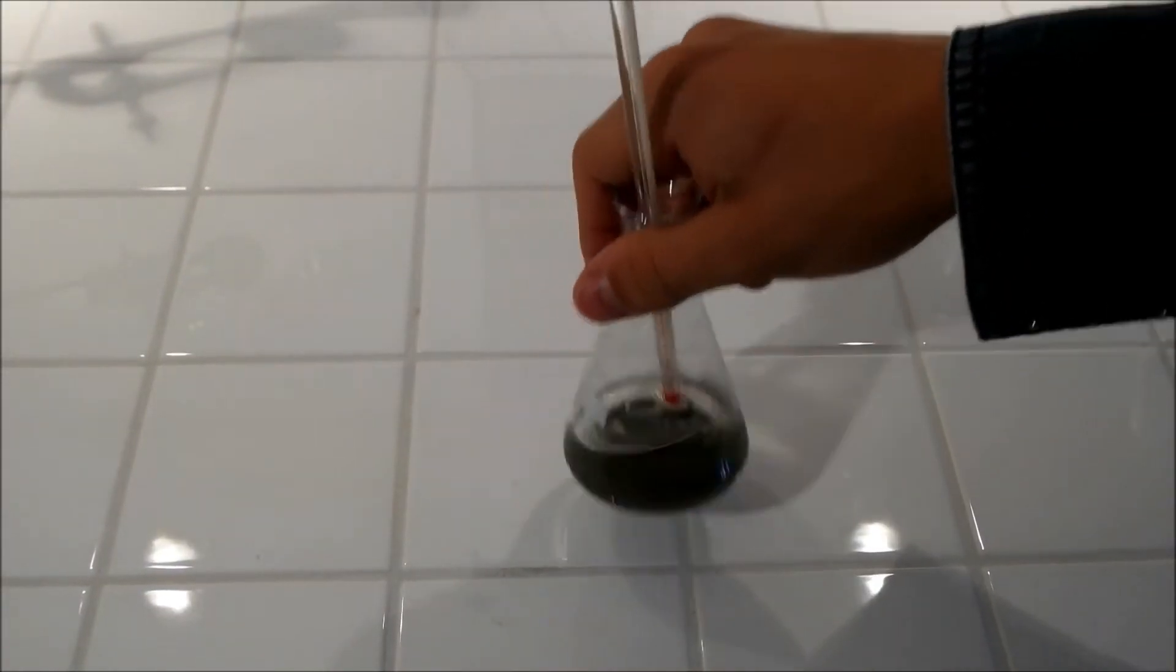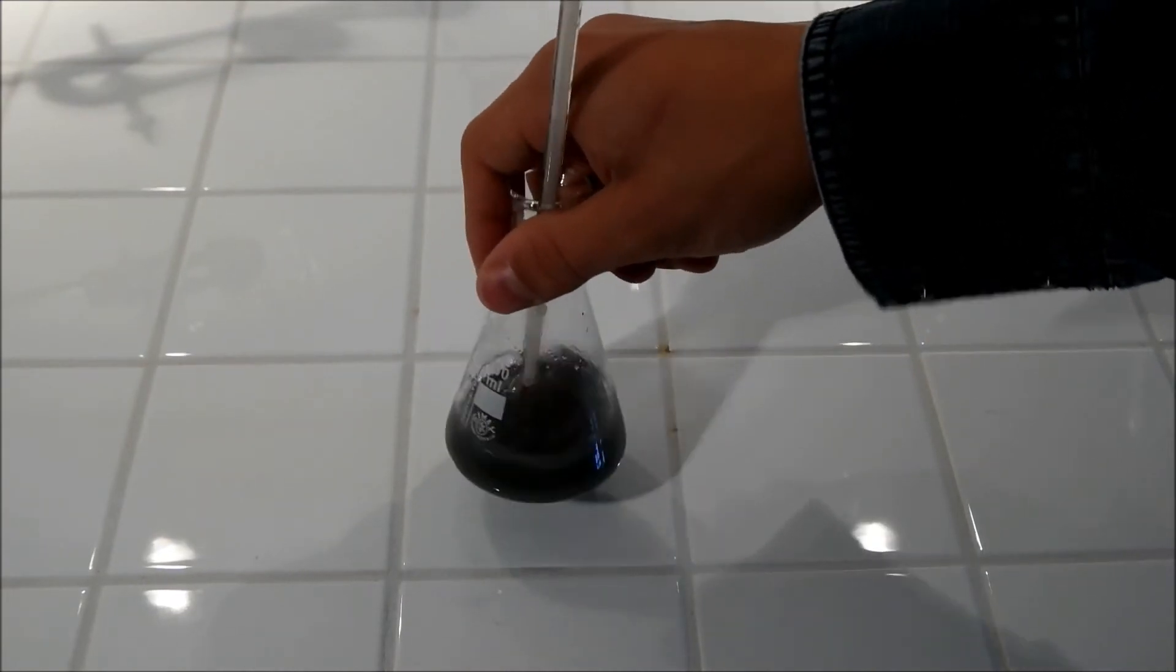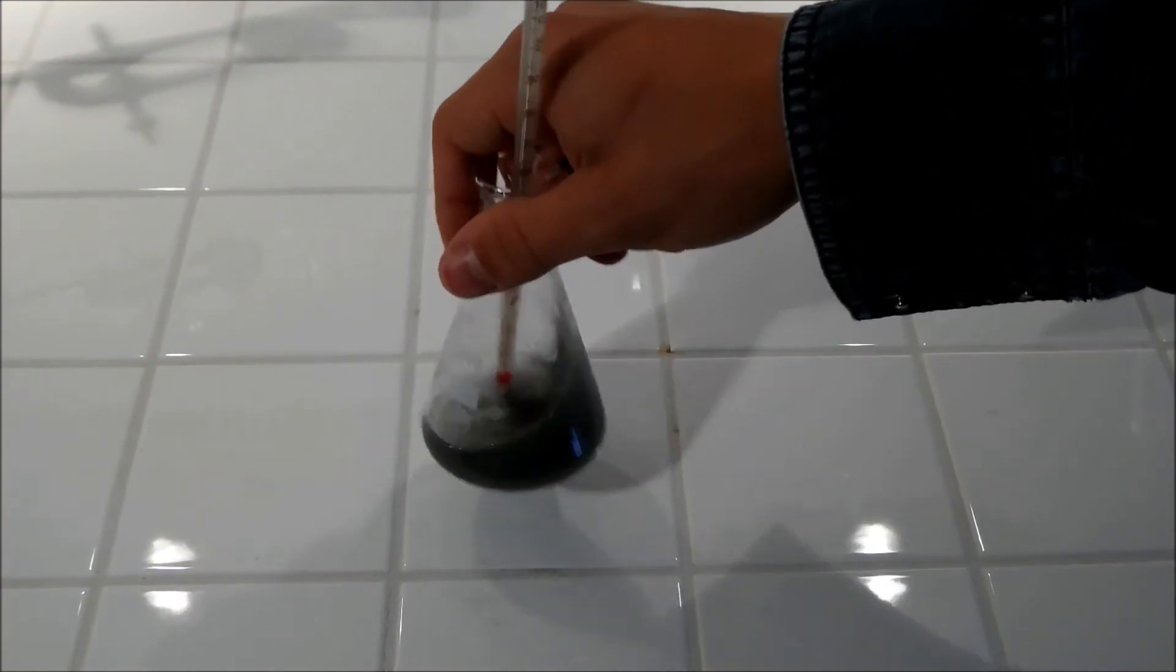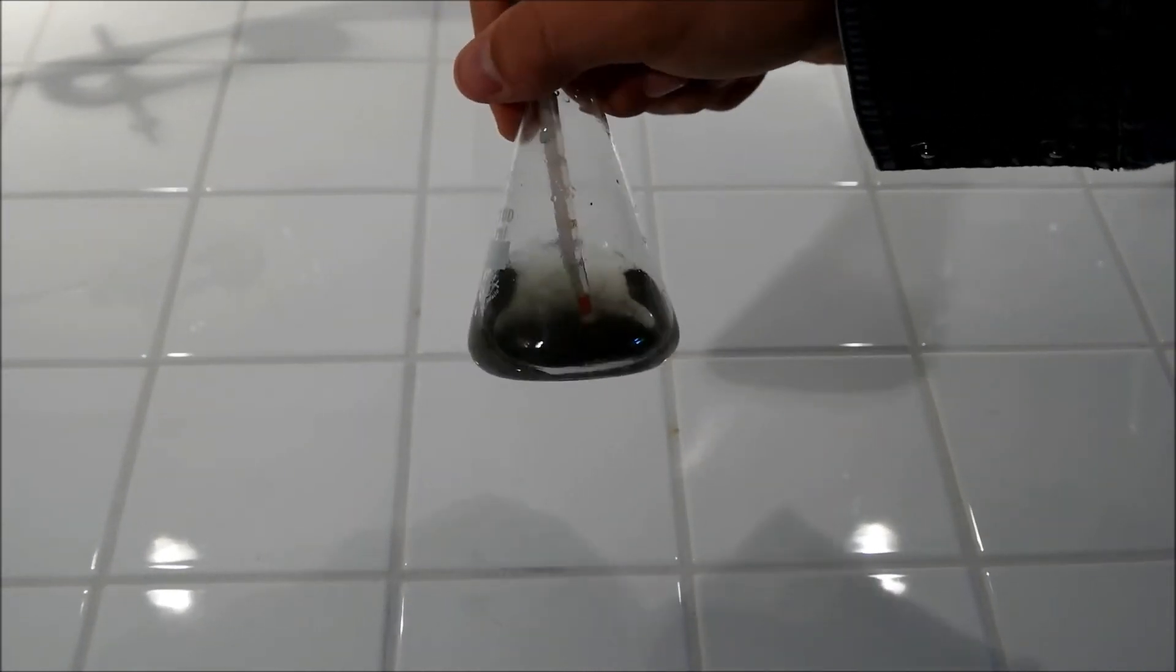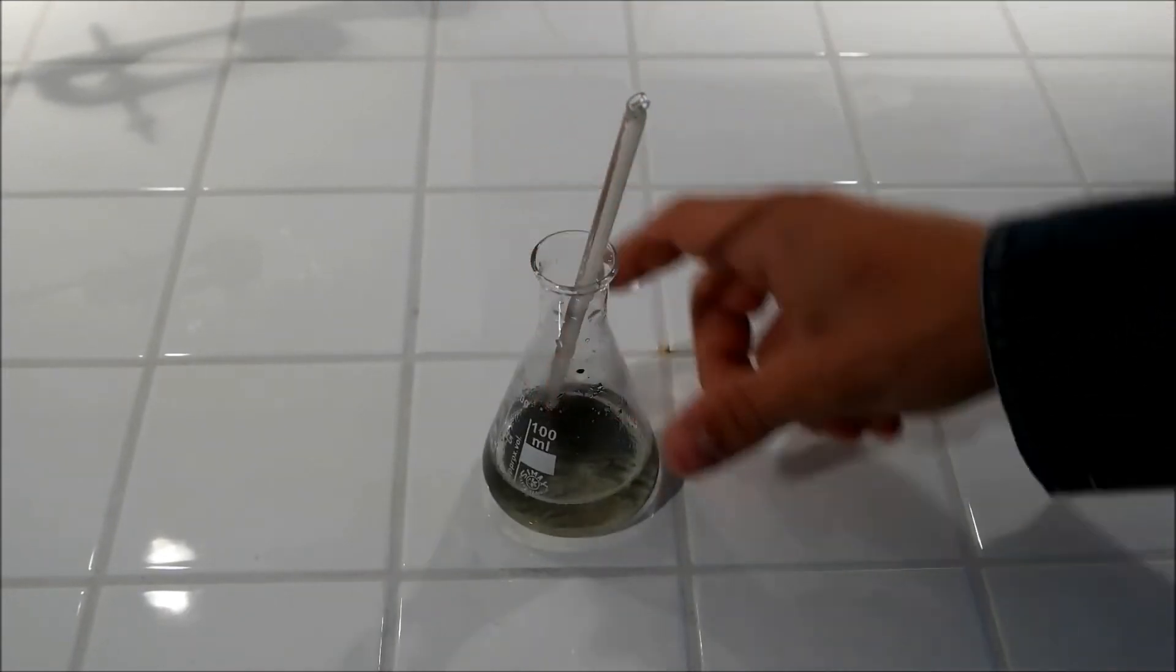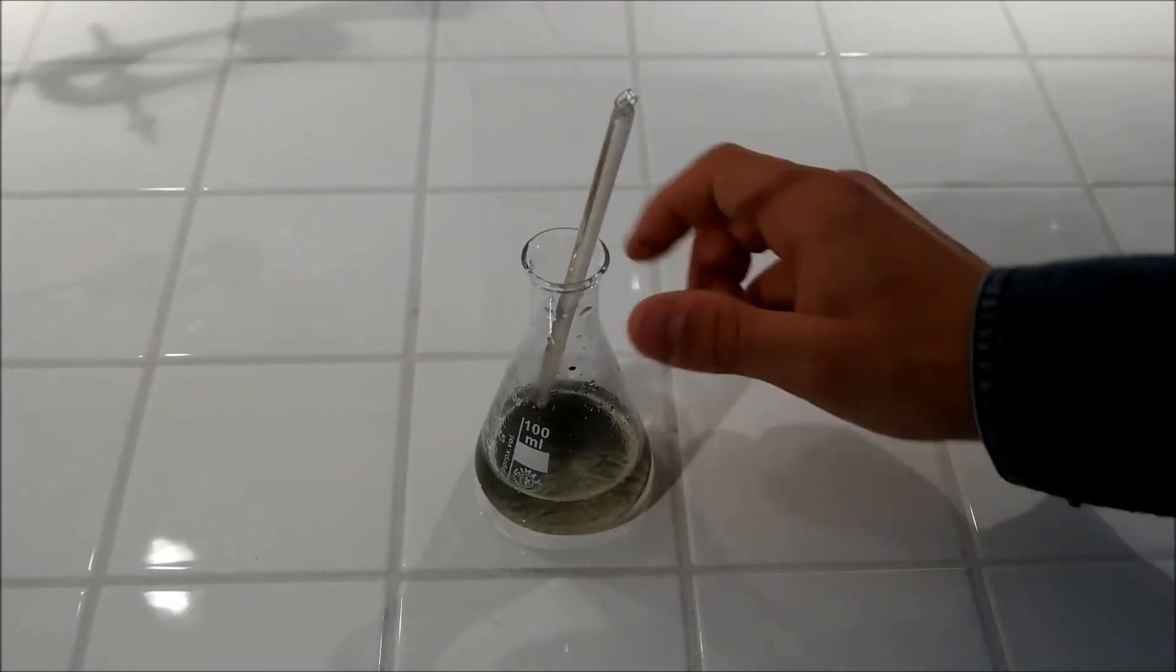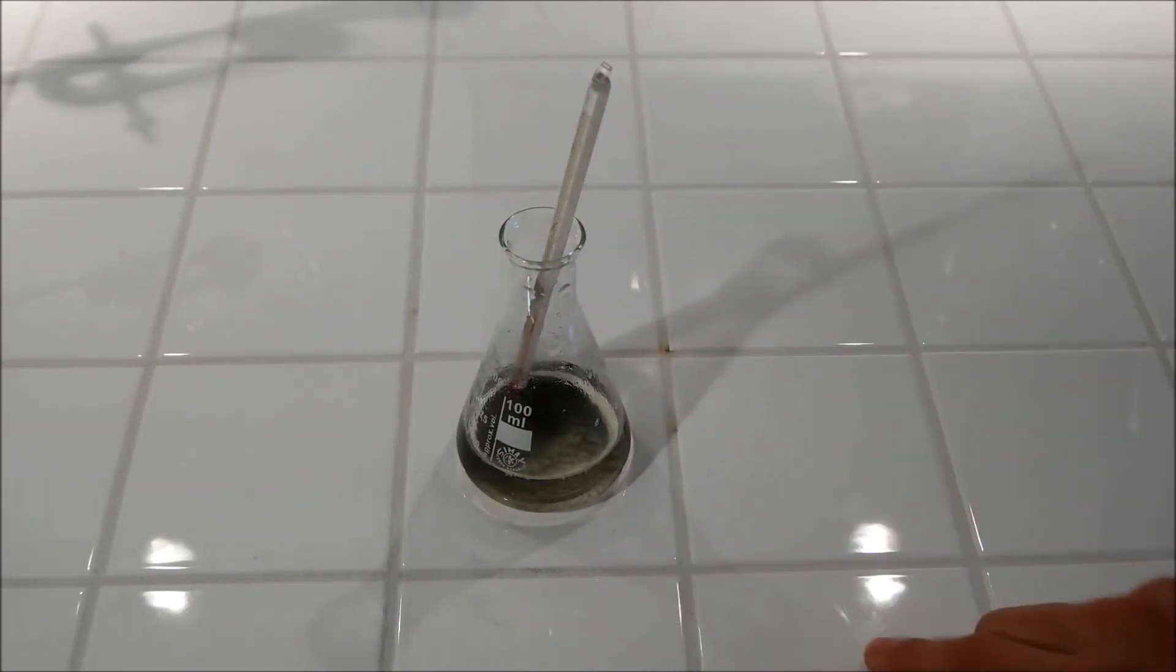After some time of stirring this, the brown orange color will disappear and this only looks like water with a powder on the floor. And later we will pour the fluid in our u-tube and keep the powder in the Erlenmeyer flask.